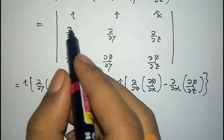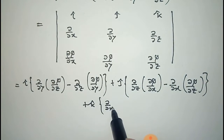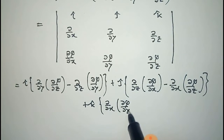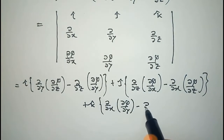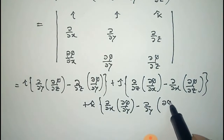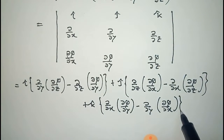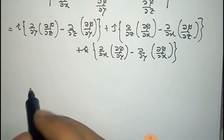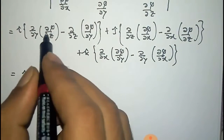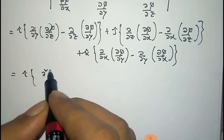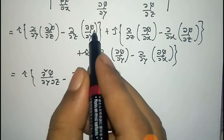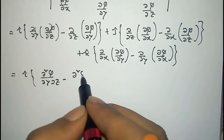Expanding with respect to k-cap gives del/del x of (del phi/del y) minus del/del y of (del phi/del x). This equals i-cap times (del²phi/del y del z minus del²phi/del z del y).